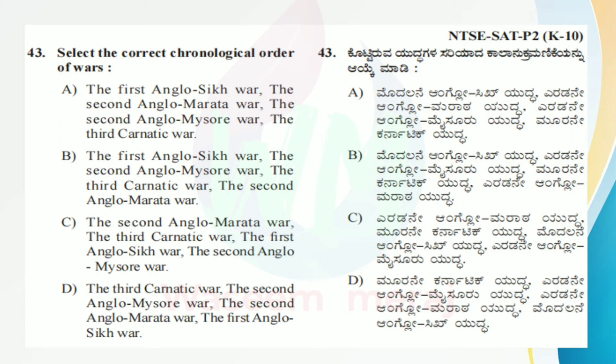Order C: the second Anglo-Maratha war, the third Carnatic war, the first Anglo-Sikh war, the second Anglo-Mysore war. Order D: the third Carnatic war, the second Anglo-Mysore war, the second Anglo-Maratha war, the first Anglo-Sikh war.